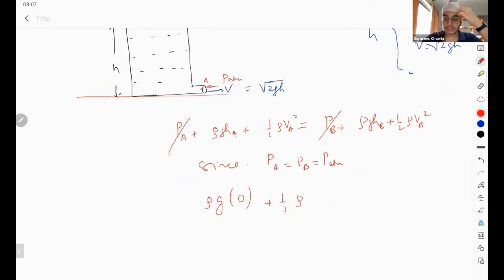Fine, just ½ρv_a² = ρgh + ½ρv_b². Okay. Fine.